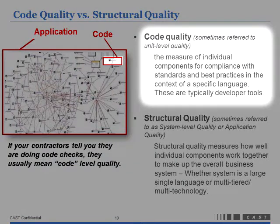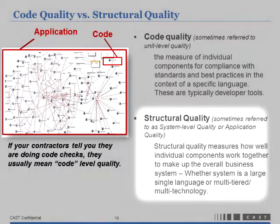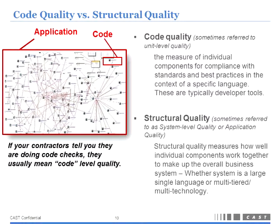You have code quality, which is like the hygiene of the code from a developer standpoint — almost like a spell checker for a paper you might write. Then you have structural quality, which, if you think of it like a term paper, it's not just good enough to have everything spelled correctly and grammar correct. Hopefully there's a structure in place, a plot line, development of your thesis. Structural quality — sometimes called system-level quality or application quality — measures how individual components fit together to create a larger piece. This is becoming more and more relevant as systems grow to complexity levels we've never seen before.